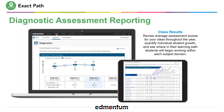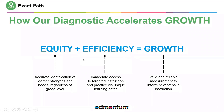Part two, to really create that efficiency: the student in this example has already been assigned targeted instruction based on the results of that diagnostic. That's the piece that brings equity and efficiency together to create growth. If you imagine a traditional setting where a student takes a test in a classroom — maybe a quiz with 10 questions — they answer some of those questions, and there's a certain question where you know in your gut when you answer it that you got it wrong.